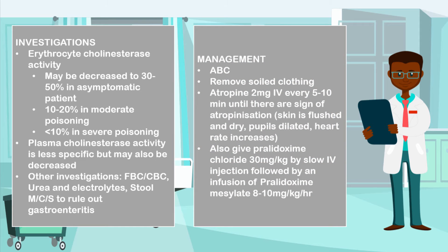In the management of the condition, you want to do your ABCs. Check that the airway is patent, suction any secretions, and nurse the patient upright if unconscious. Administer oxygen and ensure the patient is breathing, gain venous access, draw blood for investigations, and start running fluids. Remove any soiled clothes or contamination from the organophosphate and decontaminate the patient.